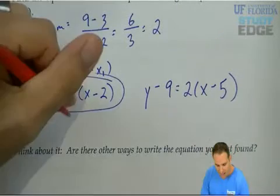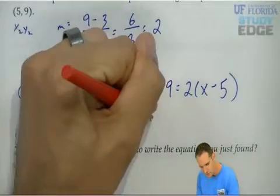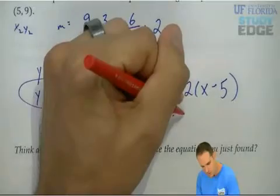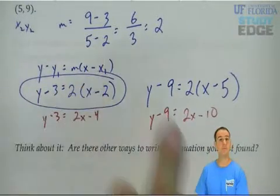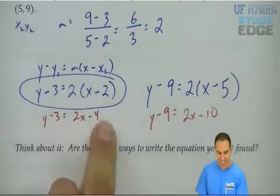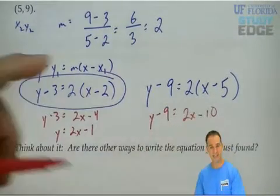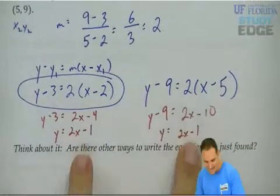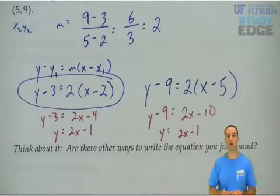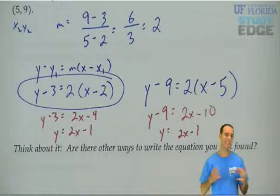I'm going to distribute the 2 in both cases. I distributed 2 to every term in the parentheses. If I add 3 over, I'll get y equals 2x minus 1. If I add 9 over, I'll get y equals 2x minus 1. And now this is in slope intercept form. Either way, we're getting the same equation of a line, just in different forms.